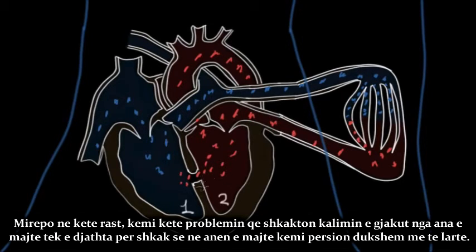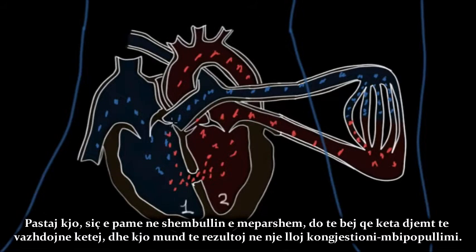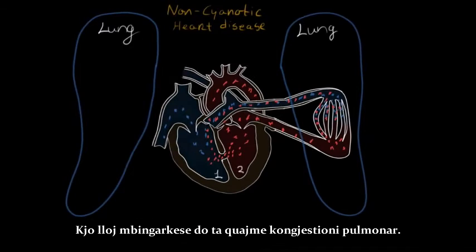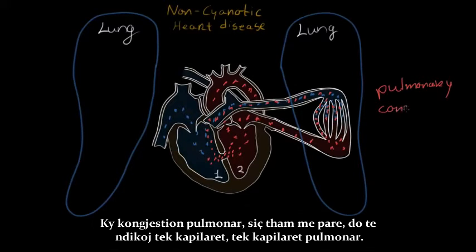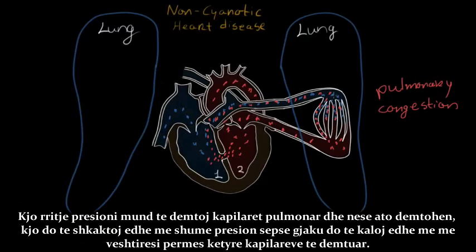But in this case, we have this little defect that causes blood to flow from the left side to the right side, because you have significantly higher pressure on the left side than on the right. Like we saw with the previous example, that is gonna cause these guys to continue on here, and that can result in a type of congestion — pulmonary congestion. That pulmonary congestion is gonna be in your pulmonary capillaries, and that increase in pressure can actually cause damage to these pulmonary capillaries.